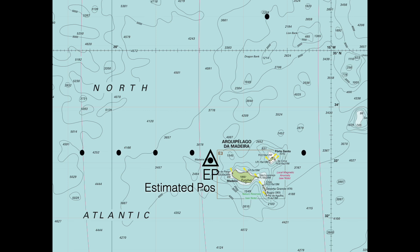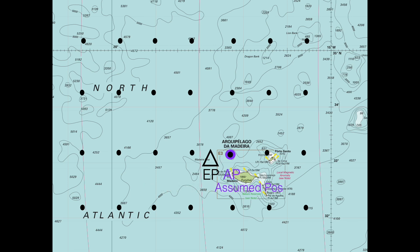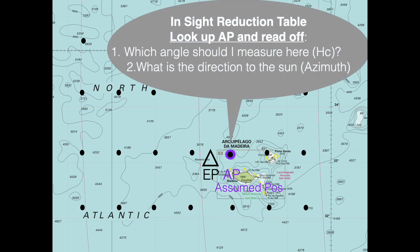There are loads of assumed positions or positions you could choose for which the data is available. So which one should we choose? Well, the one closest by. And the closest by would be this one in this case. So why do we choose one of these dots — the closest one? Because for exactly that dot there is some information available in the sight reduction table. So for this assumed position, here we can look up and find in the sight reduction table which angle I should measure at this place.